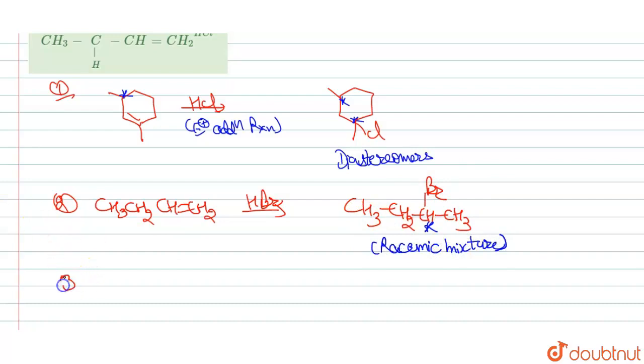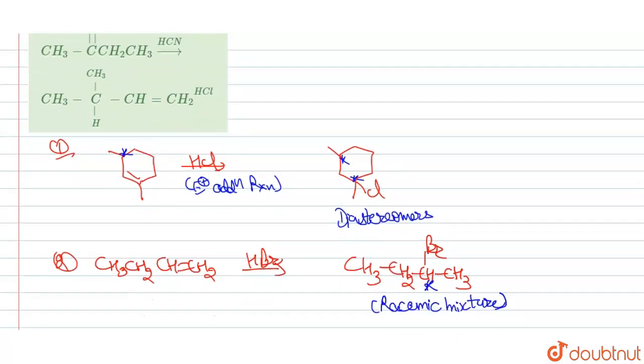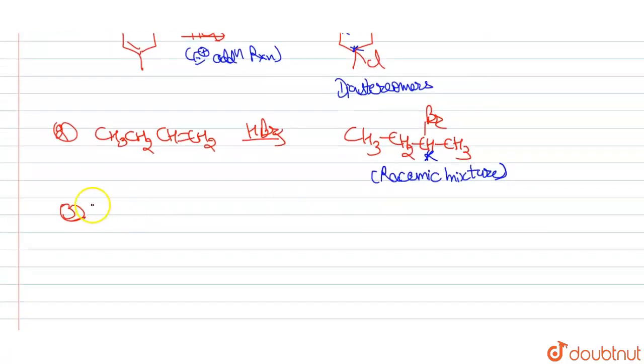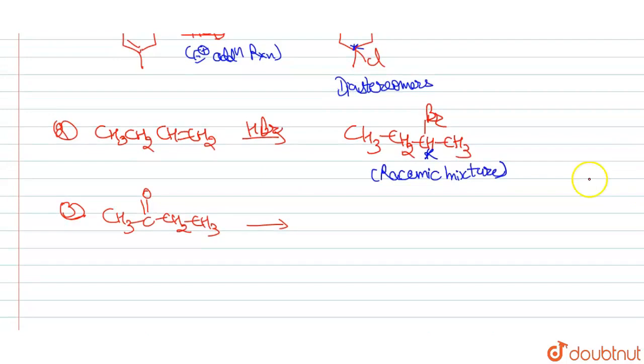Now if we look at option three, what is option three? Option three is CH3COCH2CH3. CH3COCH2CH3 when in reaction with, when we will react with it, HCN.